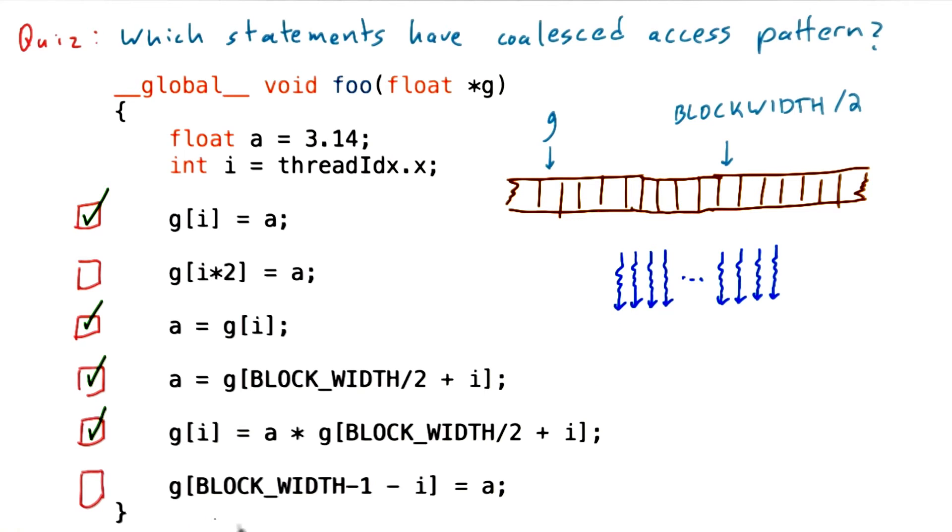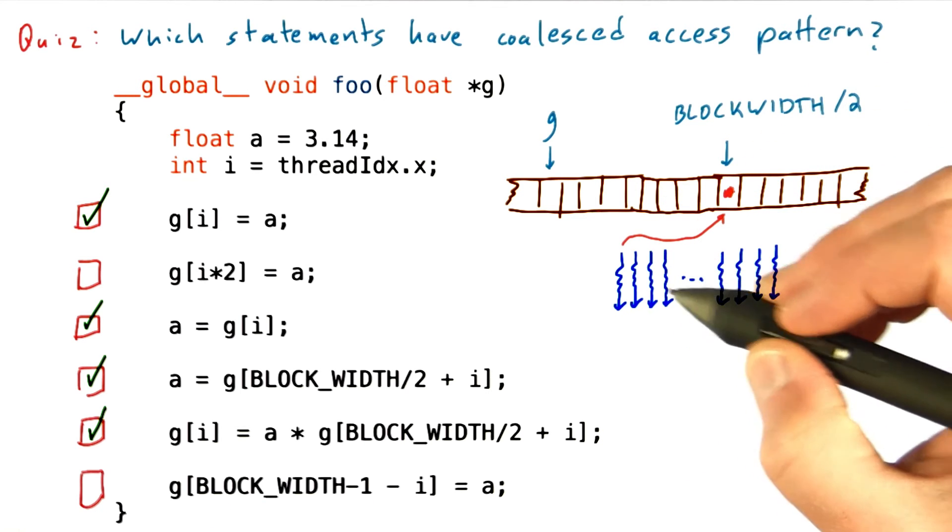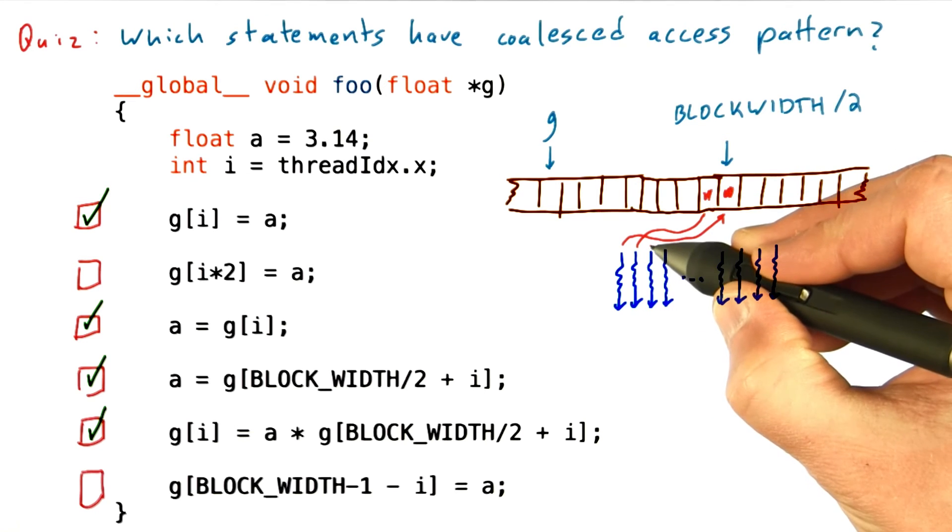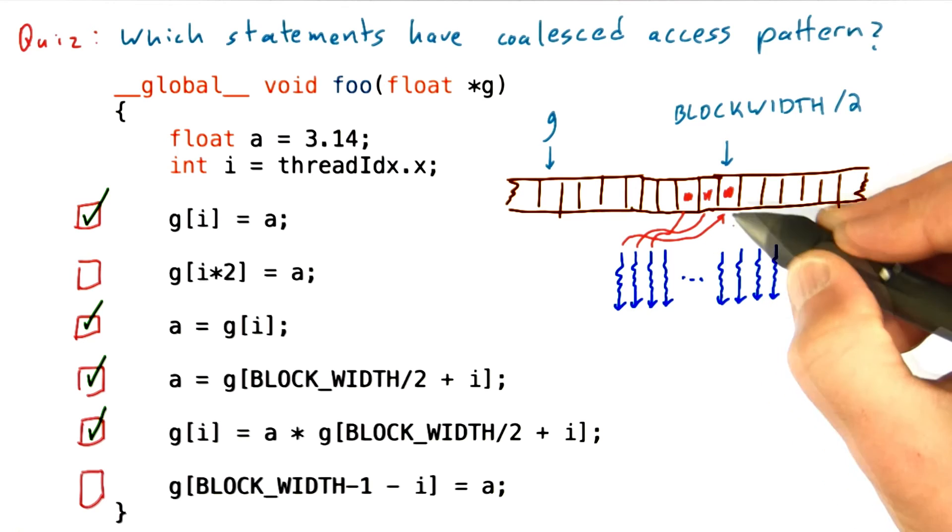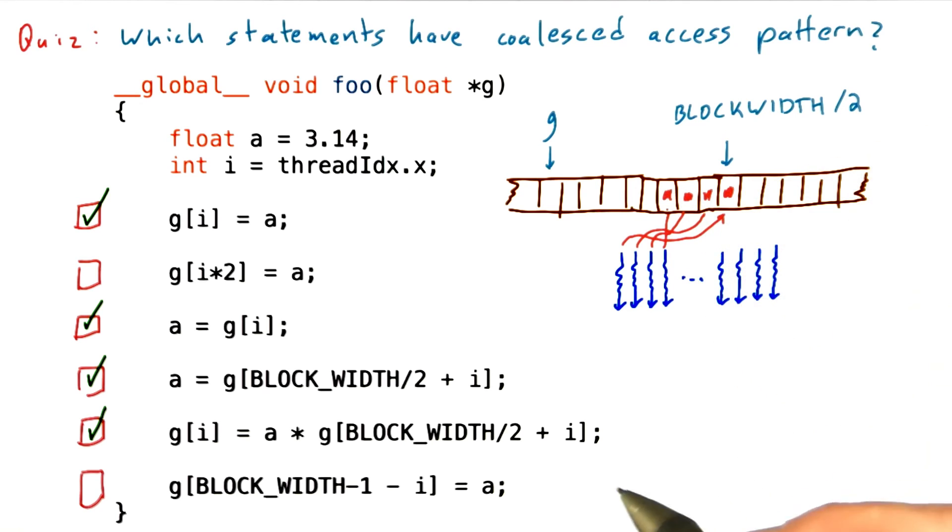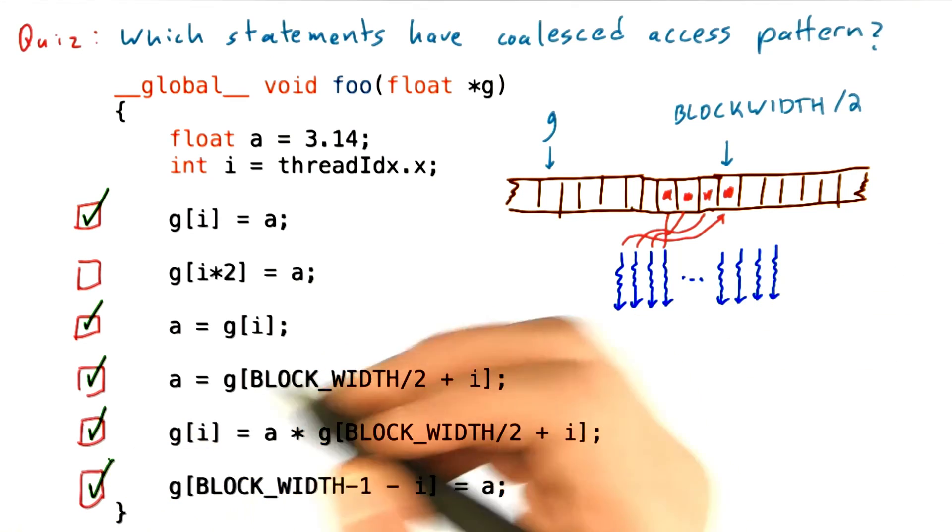And finally, this example is a little different. Here we're going to be accessing a location offset of memory minus the thread index. So thread 0 will access block width over 2. Thread 1 will access block width over 2 minus 1. Thread 2 will access block width over 2 minus 2 and so forth. And as you can see, even though we're doing the subtraction here instead of an addition, we're still accessing a contiguous region in memory. Every thread is accessing adjacent locations in a contiguous chunk of memory. So this is still coalesced.